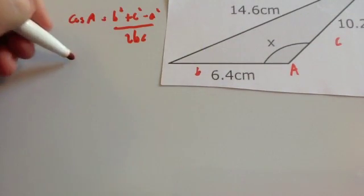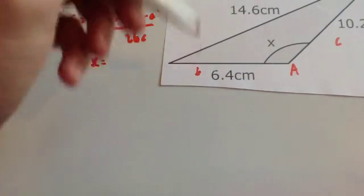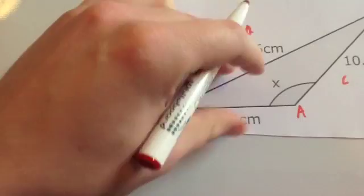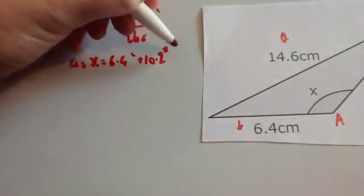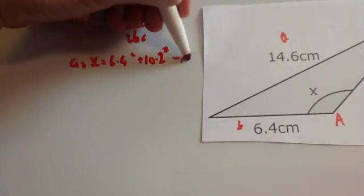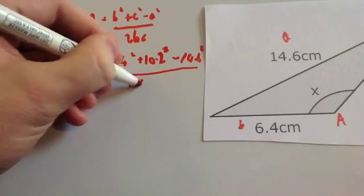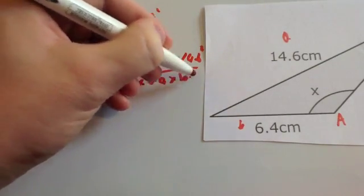Cos x = b², so 6.4² + c², which is 10.2² - 14.6², all divided by 2 × 6.4 × 10.2. Let's put that into your calculator.